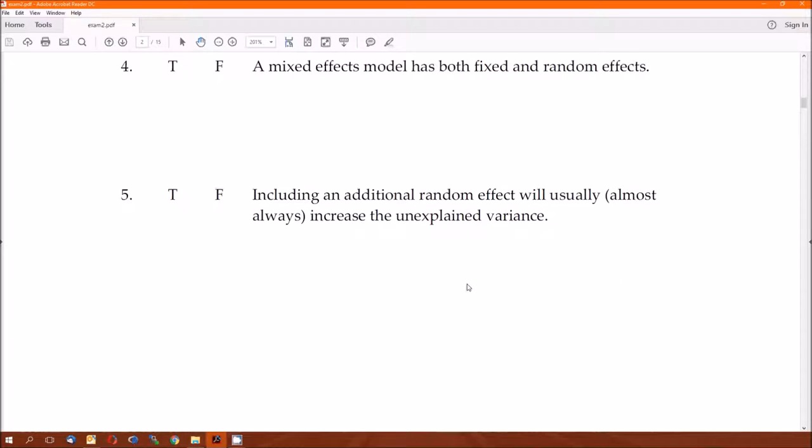And five, including an additional random effect will usually, almost always increase the unexplained variance. That's false. If there is absolutely no effect of that random effect, that is if its variation is zero, then it won't decrease it. But in all practical cases, it's going to actually decrease the unexplained variance. That's why you add a random effect.